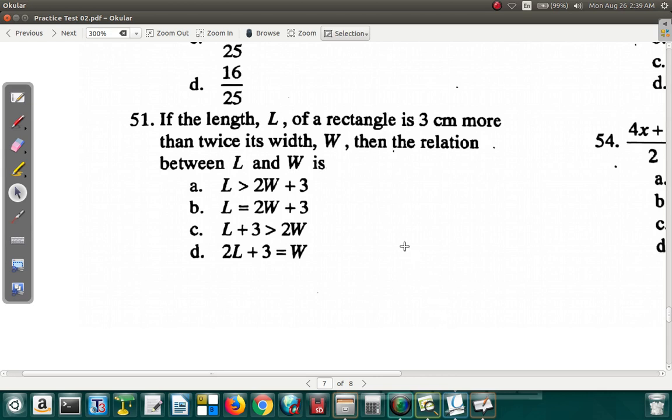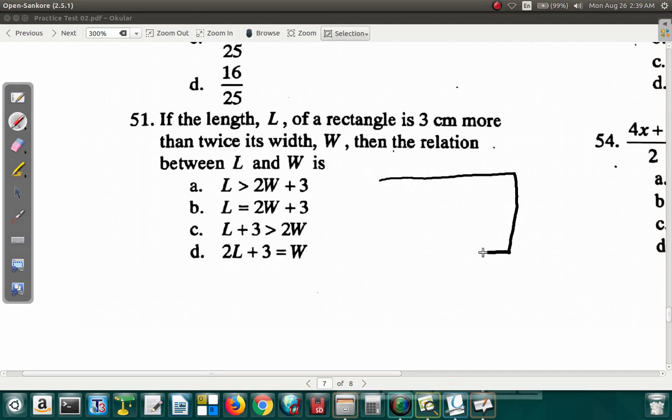Alright, so since it says rectangle, let's draw a little rectangle and see what it might look like. The width, oh, it's 3 centimeters more. They have a different interpretation of the rectangle. The height is greater than the width, so this is the width. The width is here, alright.